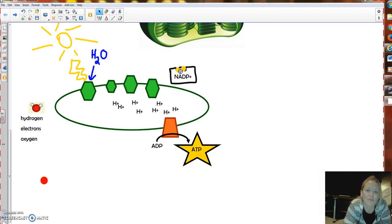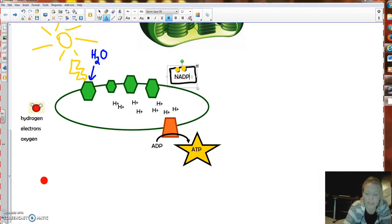Remember, they have so much energy, we can't just let them go or they'd be very damaging. But we need to use all that energy. So we have it attached to this special molecule called NADP+. Now, as soon as it attaches to that NADP+, it changes its name. Now it's NADPH. Now it's loaded. So now we've loaded it with electrons. It's ready to go to the Calvin cycle.